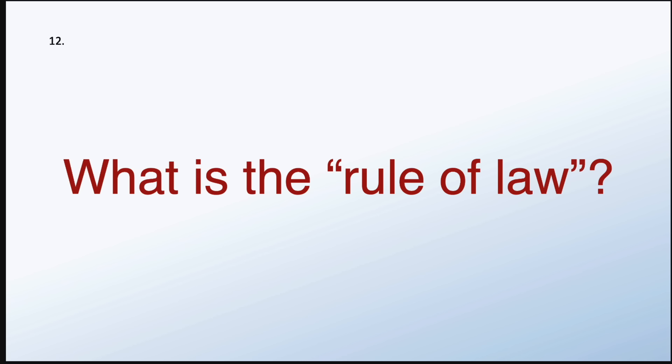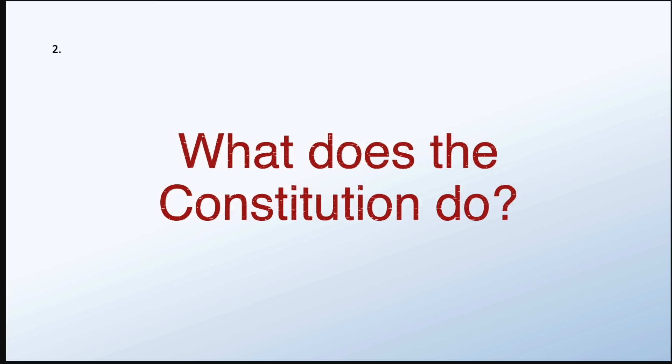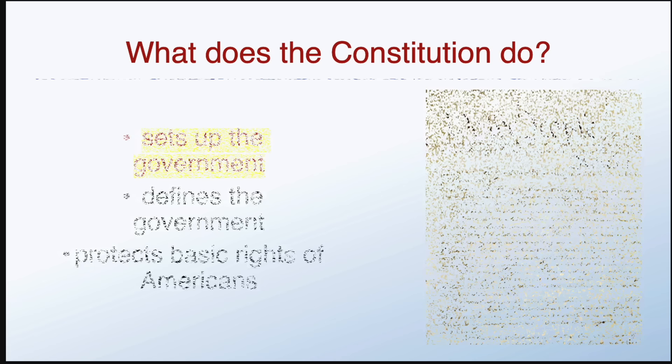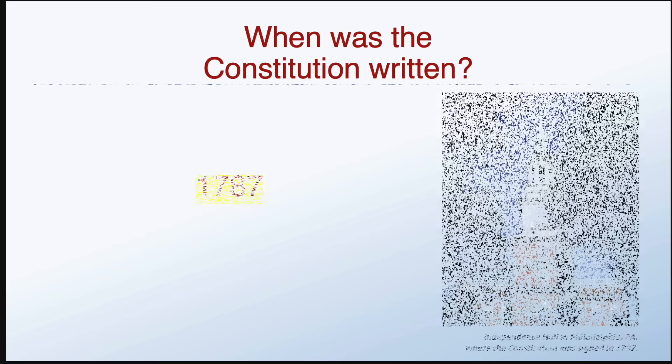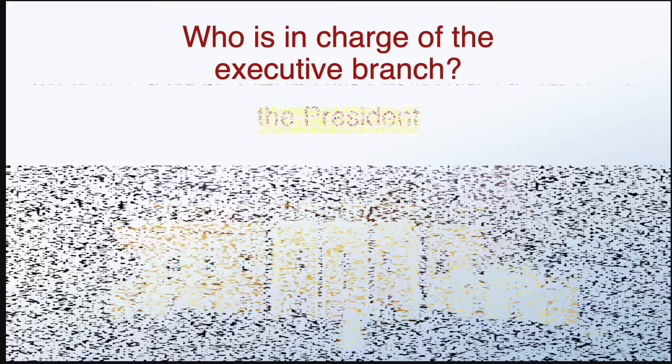What is the rule of law? Everyone must follow the law. What does the Constitution do? Sets up the government. When was the Constitution written? 1787. Who is in charge of the executive branch? The President.